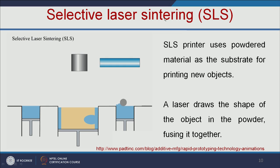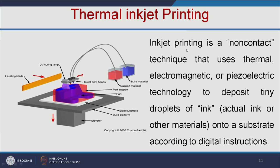In selective laser sintering, the SLS printer uses powdered material as a substrate for printing new objects. The laser draws the shape of the object in the powder and fuses it together. The next one is thermal inkjet printing — here inkjet printing is a non-contact technique that uses thermal, electromagnetic, or piezoelectric technology to deposit tiny droplets of ink or any other material onto a substrate according to digital instructions.